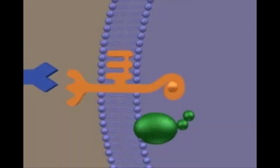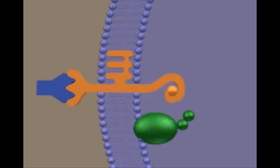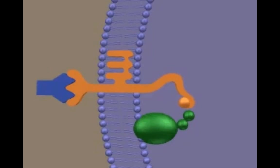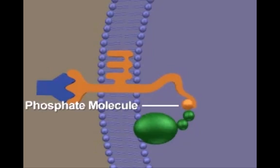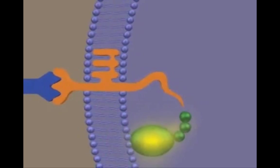Signaling molecules bind to specific receptors within the membrane. The signaling molecule bound to the receptor causes the release of a second messenger molecule into the cytoplasm. The signal is relayed through a series of molecules by chemical or conformational changes. In one type of signal transduction, the transfer of a phosphate molecule relays the signal. A cascade of phosphorylations can amplify the original signal.